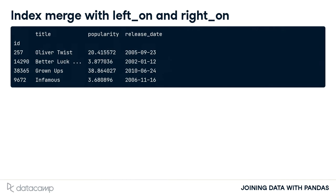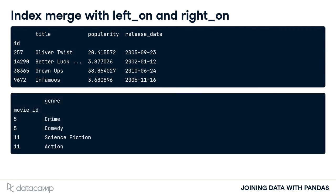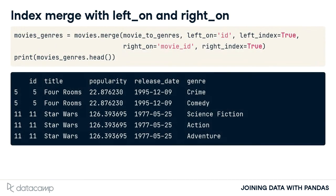There is one more thing regarding merging on indexes. If the index names are different between the two tables that we want to merge, then we can use the left on and right on arguments of the merge method. Let's go back to our movies table, shown in the top panel, and merge it with our movies to genres table, shown in the lower panel. In this merge, since we list the movies table as the left table, we set the left on equal to ID and right on equal to movie ID. Additionally, since we are merging on indexes, we need to set the left index and right index to true. These arguments take only true or false. Whenever we are using left on or right on arguments with an index, we need to set the respective left on and right on index arguments to true. The left index and right index tell the merge method to use the separate indexes.